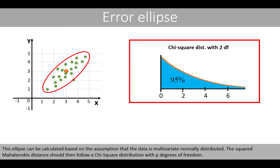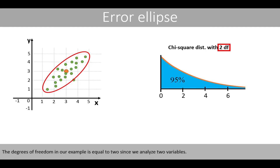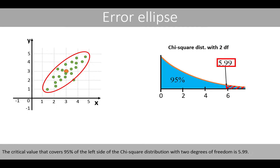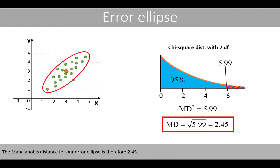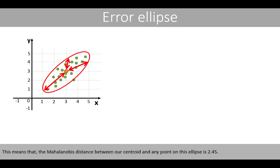This ellipse can be calculated based on the assumption that the data is multivariate normally distributed. The squared Mahalanobis distance should then follow a chi-square distribution with p degrees of freedom. The degrees of freedom in our example is equal to 2, since we analyzed two variables. The critical value that covers 95% of the left-hand side of the chi-square distribution with 2 degrees of freedom is 5.99. Thus, our squared Mahalanobis distance should be equal to 5.99, giving a Mahalanobis distance for our error ellipse of 2.45. This means that the Mahalanobis distance between our centroid and any point on this ellipse is 2.45.